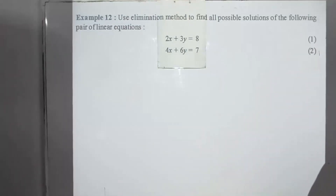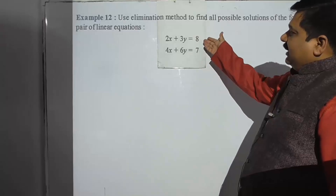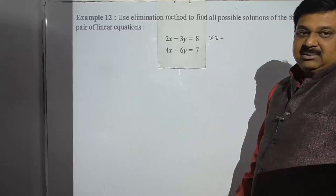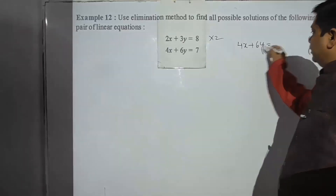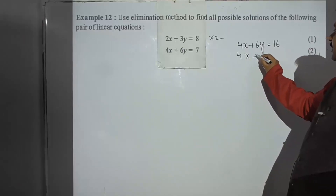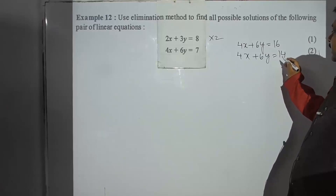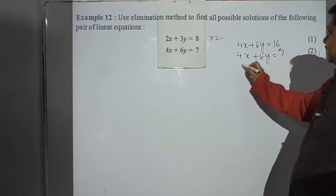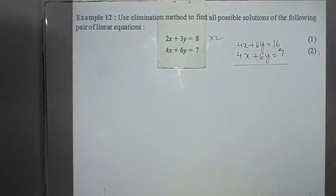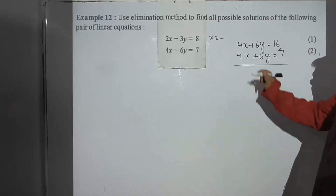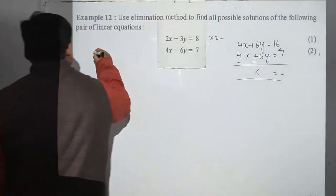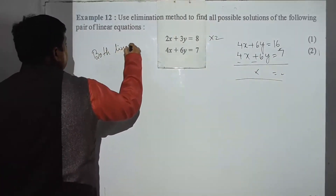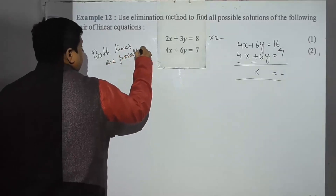In the elimination method, we need to make the coefficients the same. Multiply the first equation by 2 — this makes the coefficient 6, so the equation becomes 4x plus 6y equals 16. The second equation is 4x plus 6y equals 14. Now when we subtract, everything cancels out completely. This situation means the lines are parallel.